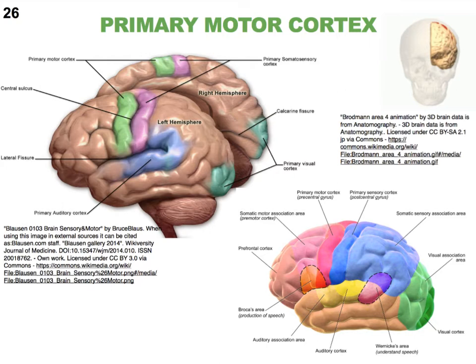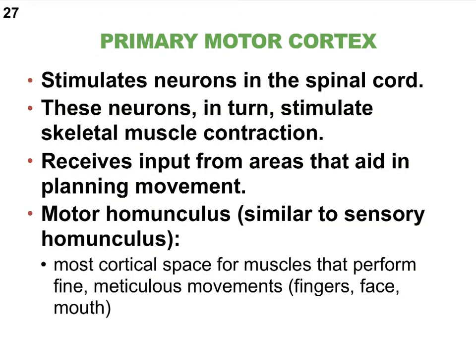Neurons that start in the primary motor cortex, in the precentral gyrus, dive into the spinal cord. From the spinal cord, somatic motor neurons leave to innervate skeletal muscles. Write this down: somatic motor neurons innervate skeletal muscles. Sometimes they don't have to go all the way into the spinal cord — for instance, if they need to control eye muscles.